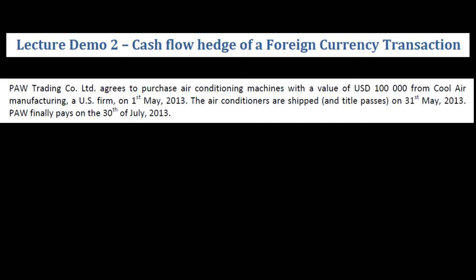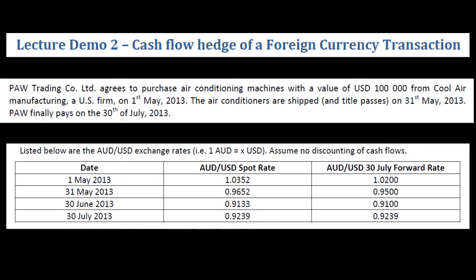So they order it, it ships and they get title to it, financial year end, they actually pay for it. Ignore the second paragraph, we'll do the hedging in a moment. So all that we're interested in at this point are the spot rates — the AUD/USD spot rate. So at this point it's 103.52. It's gone from over parity in May to dropping substantially at the end of May to dropping again.